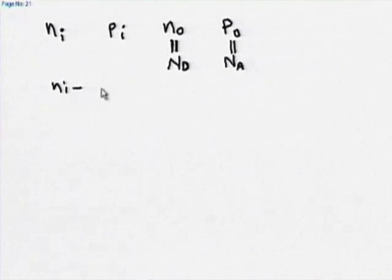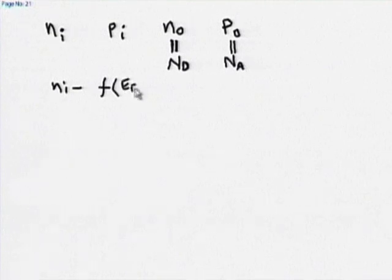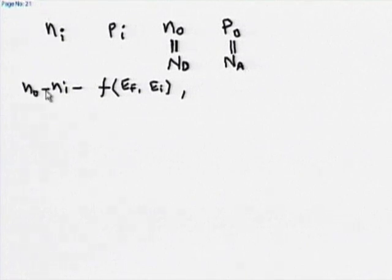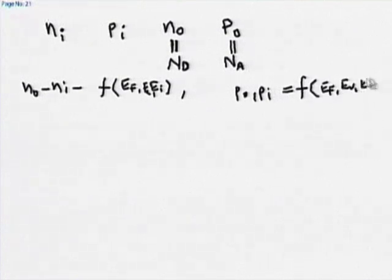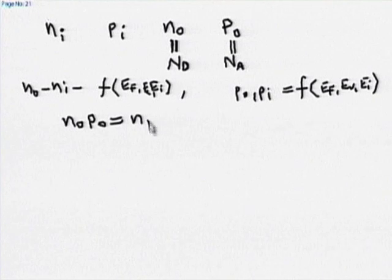We also saw n_i as a function of E_f, the Fermi level, or E_i. We also saw n_0 as a function of E_f, E_i, and E_c. Then we saw that n_0 times p_0 equals n_i squared.